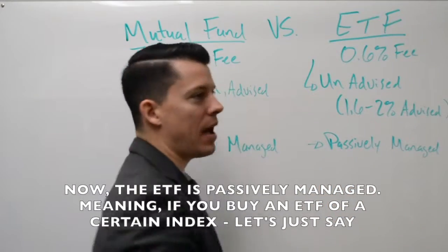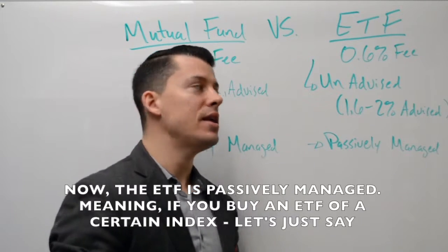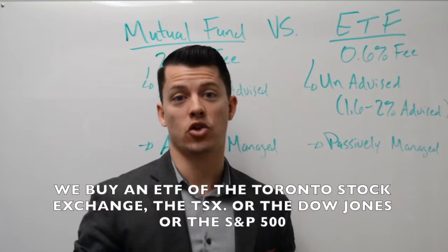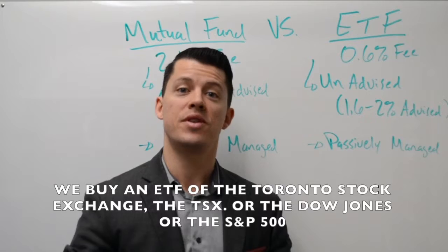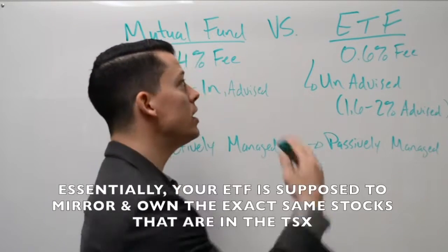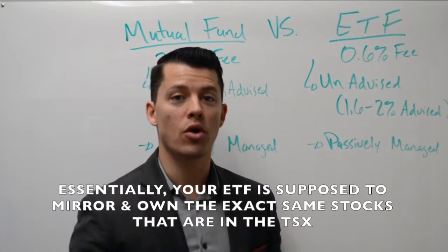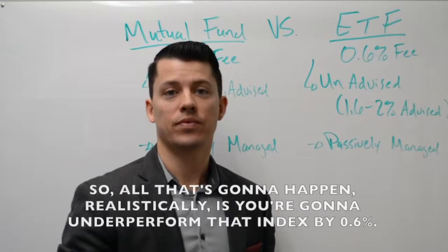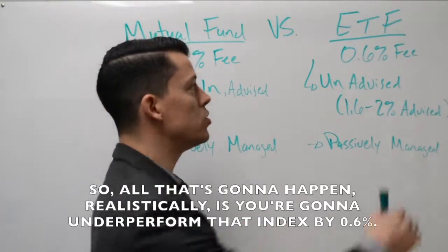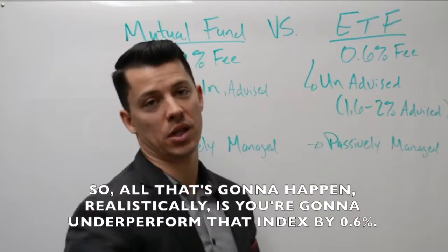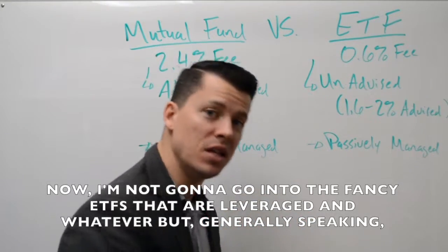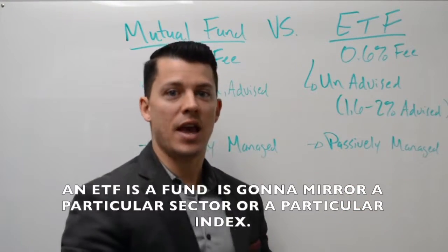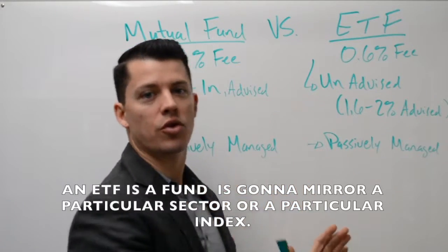The ETF is passively managed, meaning that if you buy an ETF of a certain index — let's say the Toronto Stock Exchange, the TSX, or the Dow Jones or the S&P 500 — your ETF is supposed to mirror and own the exact same stocks that are in the TSX. Realistically, you're going to underperform that index by 0.6%. Generally speaking, an ETF is a fund which mirrors a particular sector or a particular index.